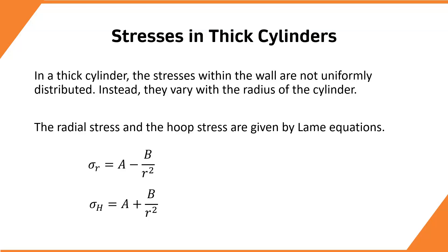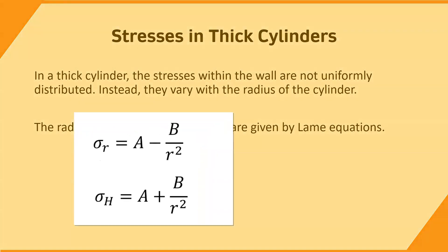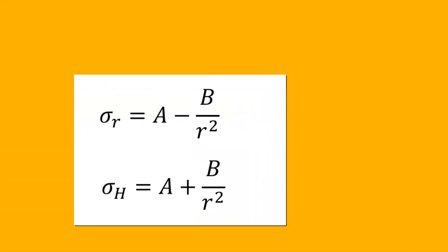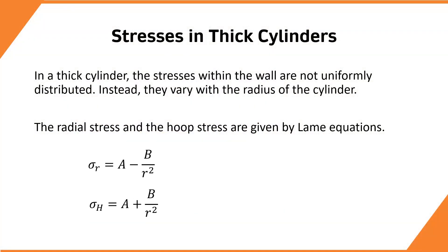The radial stress and the hoop stress are given by Lame equations. The Lame equations are: radial stress, σr = A − B/R², and hoop stress, σh = A + B/R².